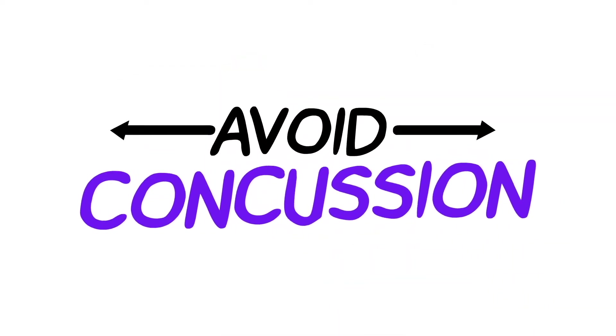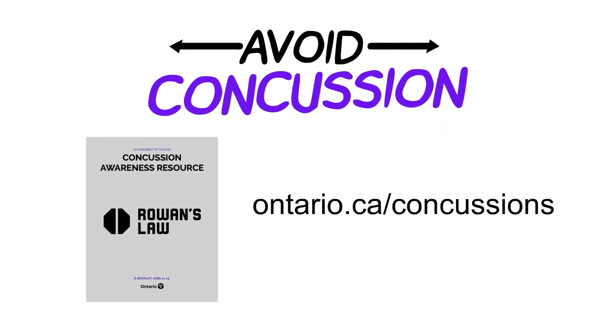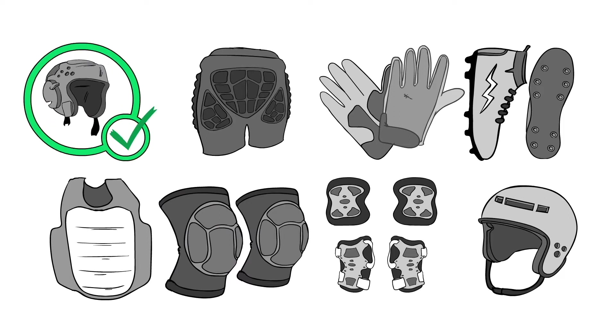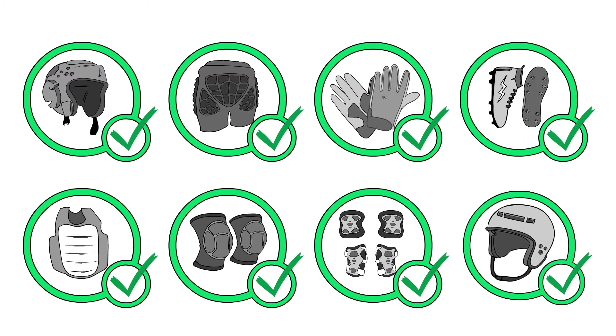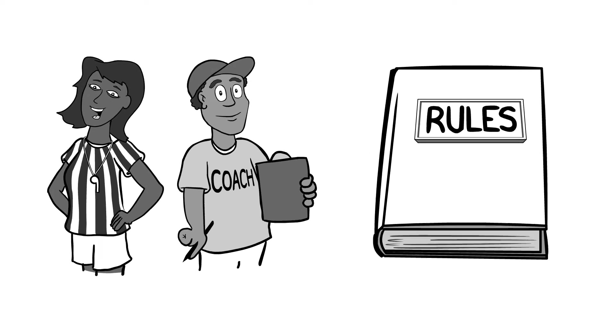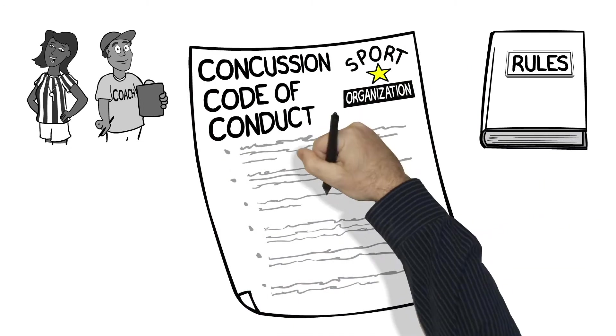There are things you can do to avoid getting a concussion in the first place. Step one is to learn as much as you can about concussions, like you're doing right now. Next, you need to make sure you wear all the right equipment for your sport. Everything needs to fit properly and be in good condition. You also need to know and follow the rules. At the start of the season, you need to read and agree to your sport team's concussion code of conduct.